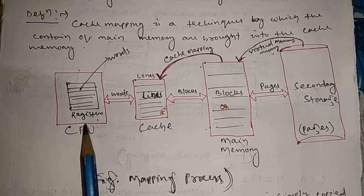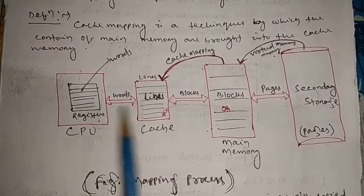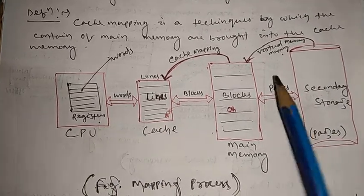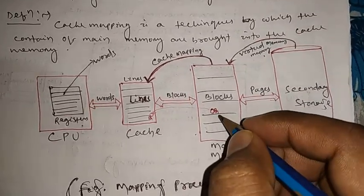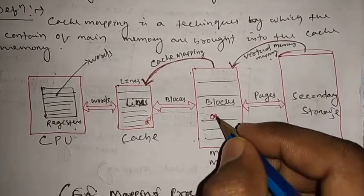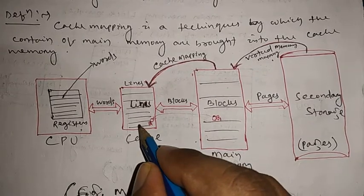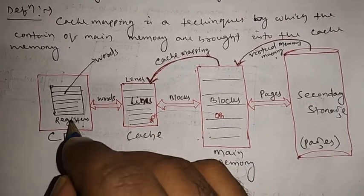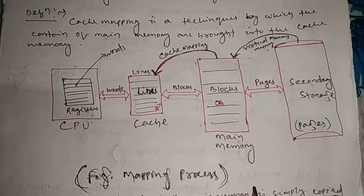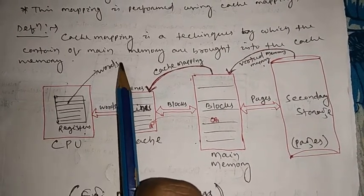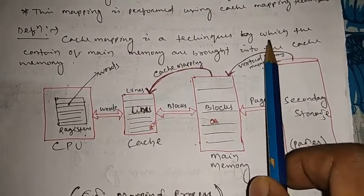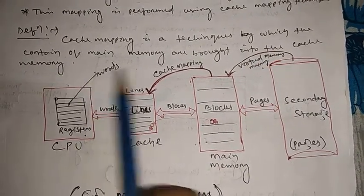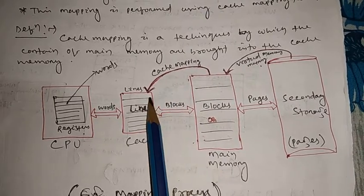Whatever data is required by the CPU — it will go to cache first. If present, execution finishes easily. If the data is not present, it goes to main memory. Suppose block number one is required by the CPU but is not present inside any cache line. That block data will be mapped to the cache and accessed by the CPU. The definition: cache mapping is a technique by which the content of main memory is brought into the cache memory — as shown in this diagram, the content of a main memory block is brought into the cache.